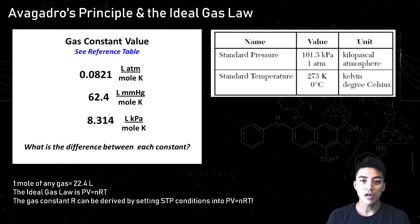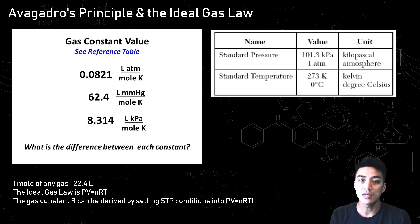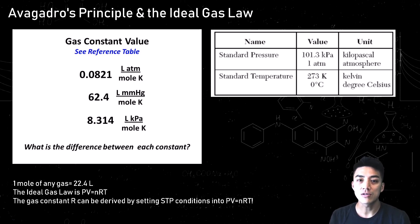In summary: Avogadro's principle states that 1 mole of any gas equals 22.4 liters under standard temperature and pressure conditions. Standard temperature is 273 Kelvin; standard pressure is anything at sea level. Furthermore, you can figure out the gas constant R by setting STP conditions into the ideal gas law, PV equals nRT. Thanks for tuning in — see you next time.